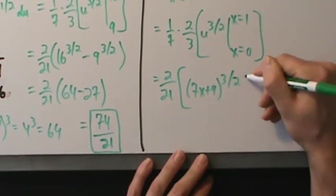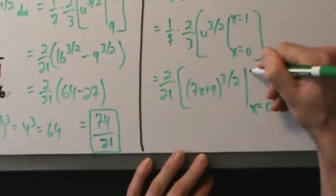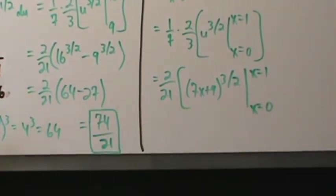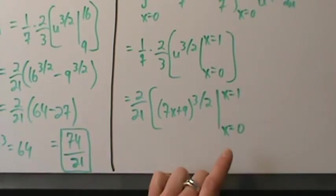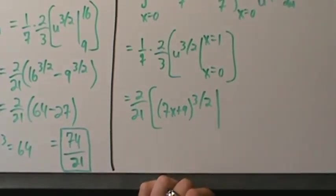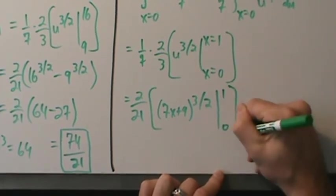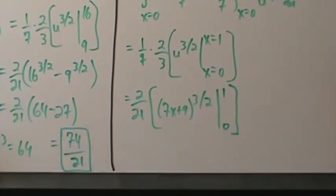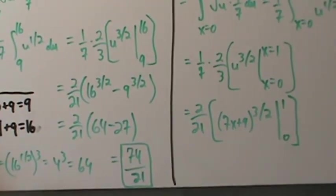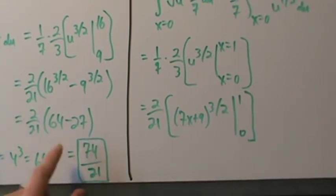Now that we're back to x, we can just write 0 to 1. Evaluating (7x + 9)^(3/2) from 0 to 1: at x = 1, 7(1) + 9 = 16, so we get 16^(3/2). At x = 0, 7(0) + 9 = 9, giving 9^(3/2). This will give us 64 and 27 again.